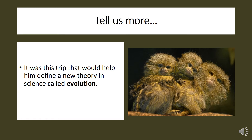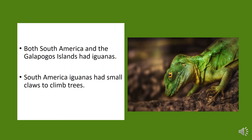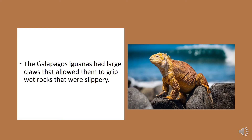This trip would help Darwin define a new theory in science called evolution. Darwin noticed that both South America and the Galapagos Islands had iguanas. The iguanas in South America had small claws to climb trees, while the iguanas on the Galapagos Islands had large claws, which allowed them to grip wet, slippery rocks.